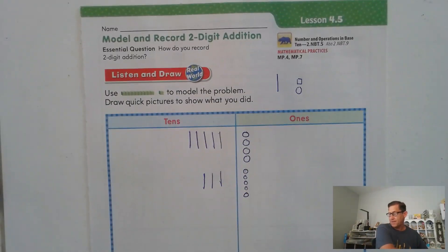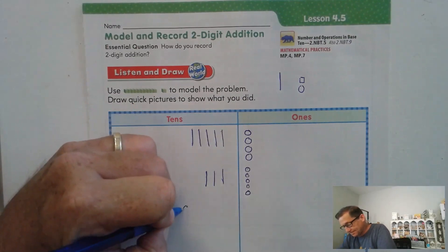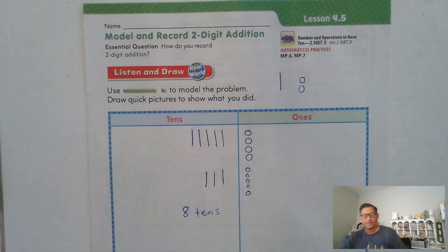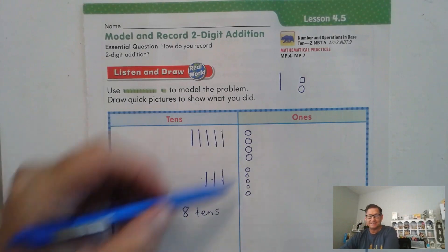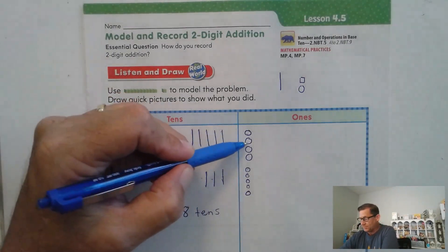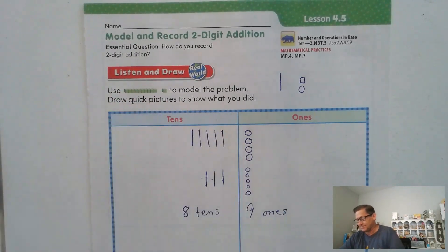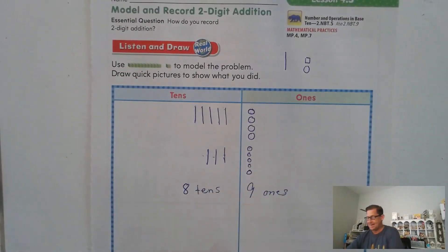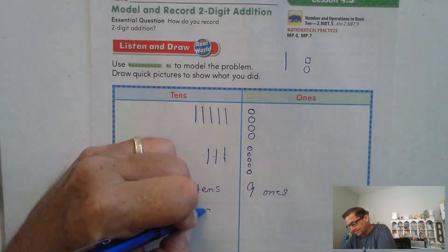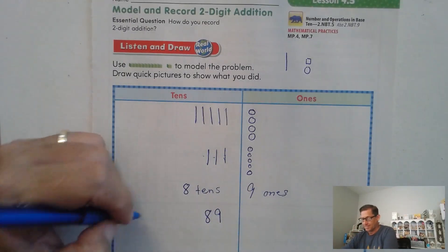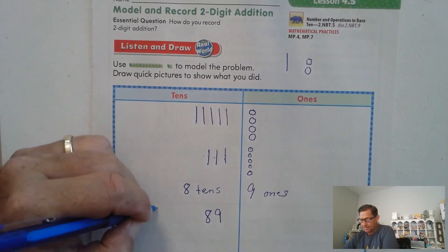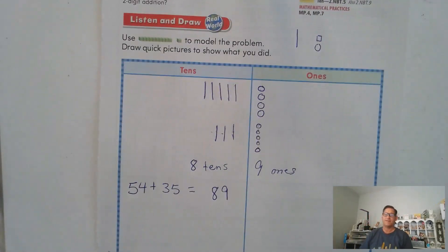All right, so what do we have? How many tens did you come up with? You should have had eight tens. Five, six, seven, eight tens. And we have how many ones? We have one, two, three, four, five, six, seven, eight, nine ones. So we have a total of 89. So we can say 54 plus 35 equals 89.